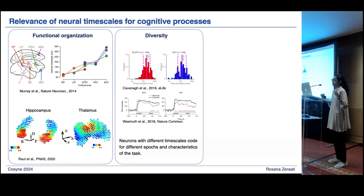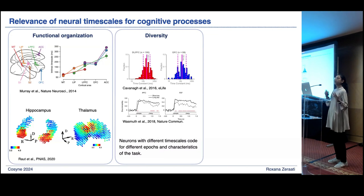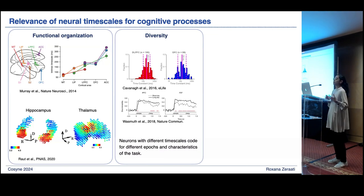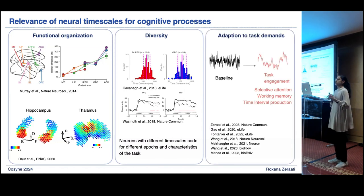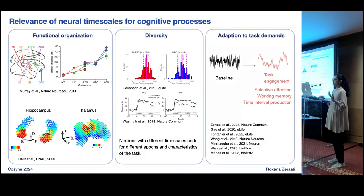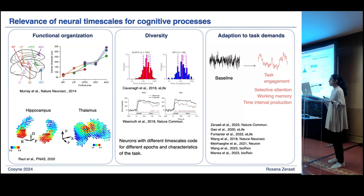If we zoom in on timescales of neural activity within one area, we also see a large diversity. Different studies have suggested that fast neurons and slow neurons code for different epochs or different variables of a task. And these timescales are not fixed properties of the brain — they can adapt to task requirements. For example, during selective attention tasks or working memory tasks, we would have an increase in the timescales of neural activity.